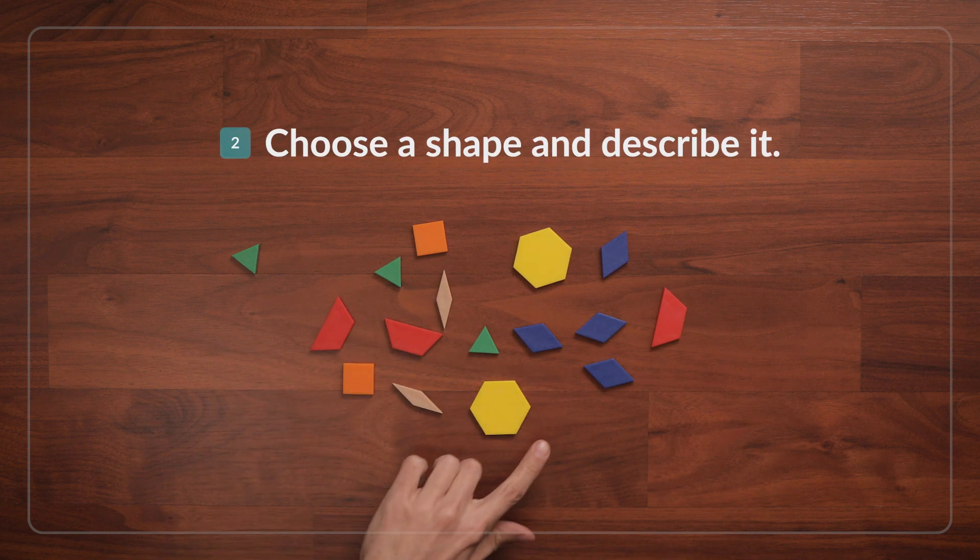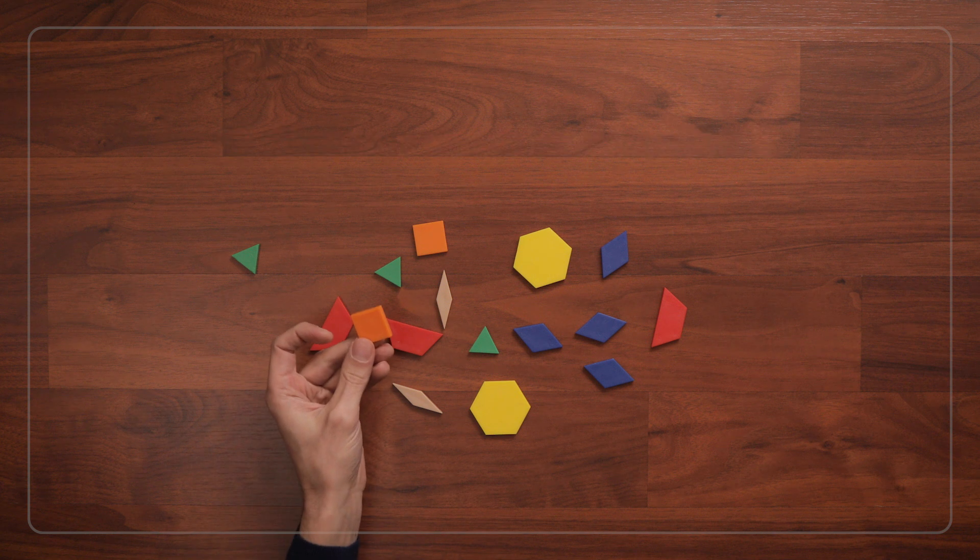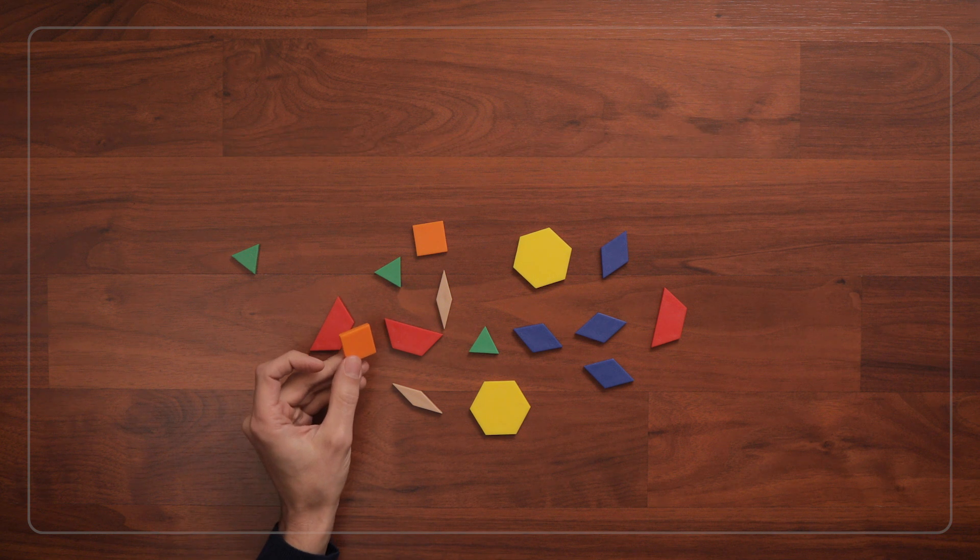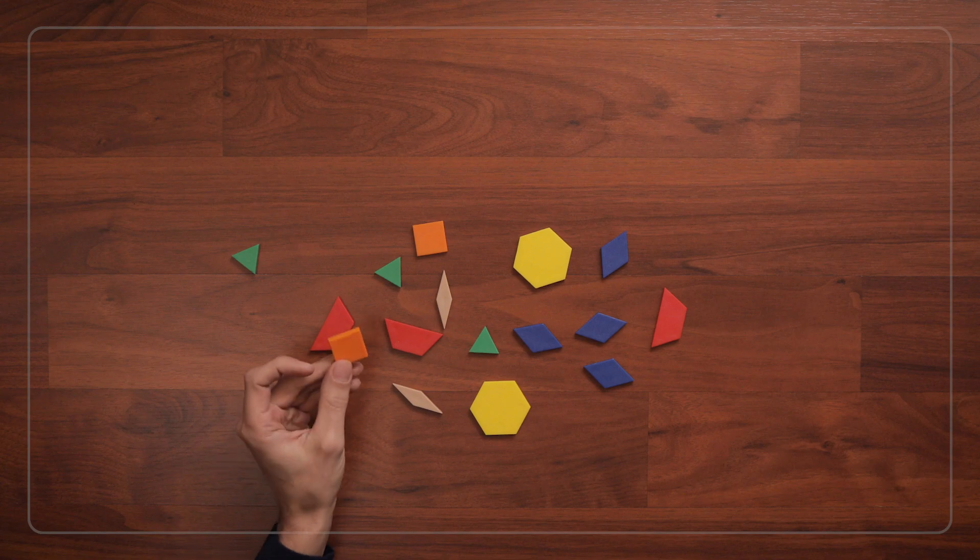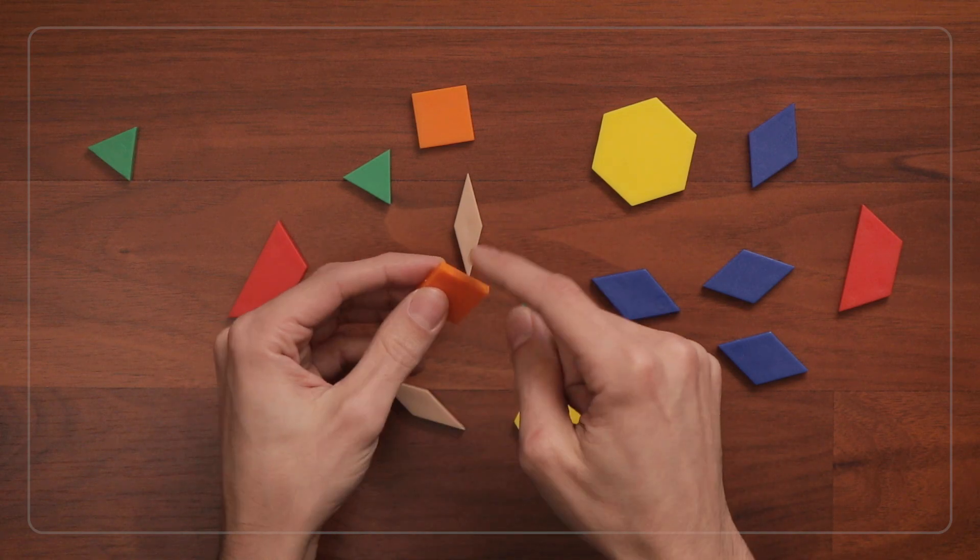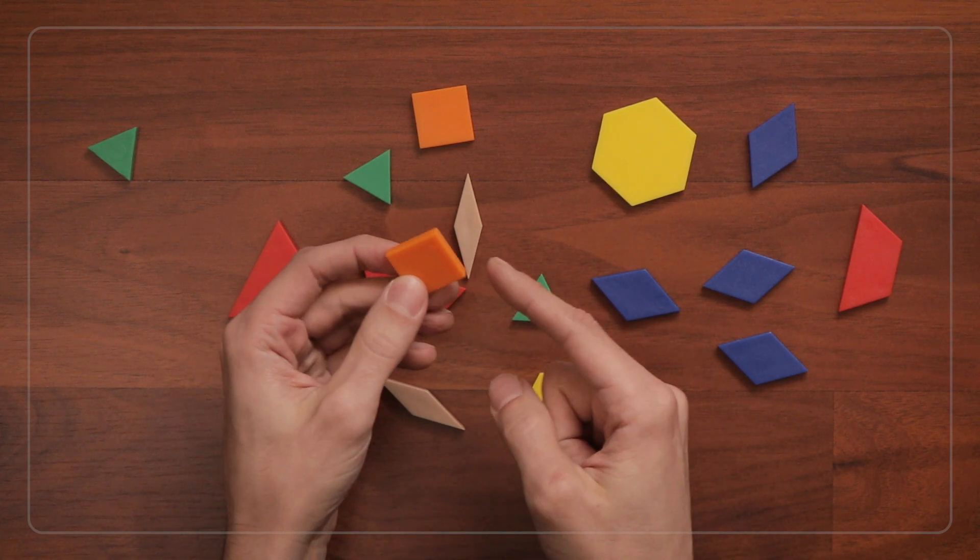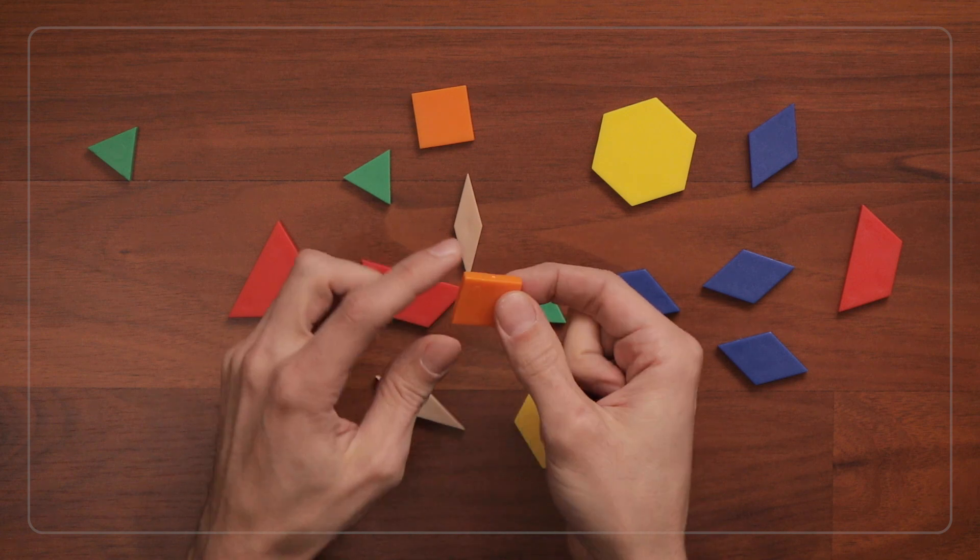Choose one shape, hold it up, and describe it. You can say, I have a square. It has four sides and four vertices. See? One, two, three, four sides, and one, two, three, four vertices.